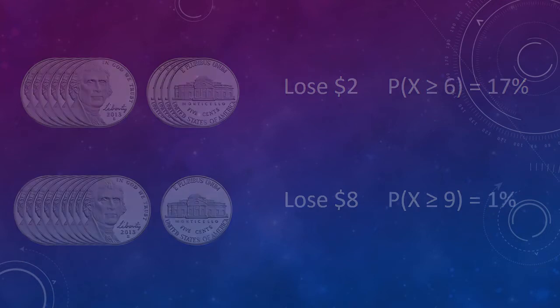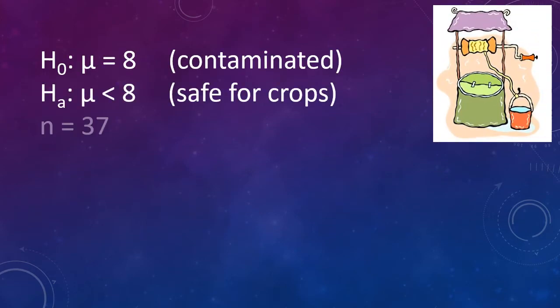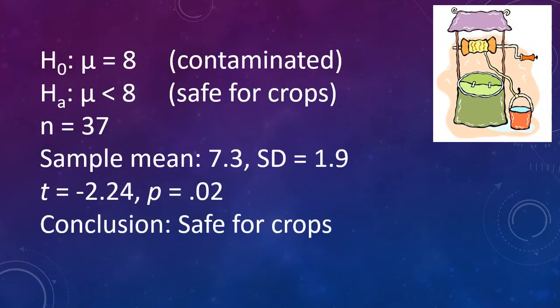Suppose that we're testing a well for arsenic to see if it's safe. Water is safe for agricultural use if it has no more than 8 parts per billion of arsenic. A random sample of 37 cups of well water had a mean of 7.3 parts per billion arsenic. The farmer running the test calculated a test statistic of t equals negative 2.24 with a one-sided p-value of 2%, and he concludes that the water is safe for the crops.